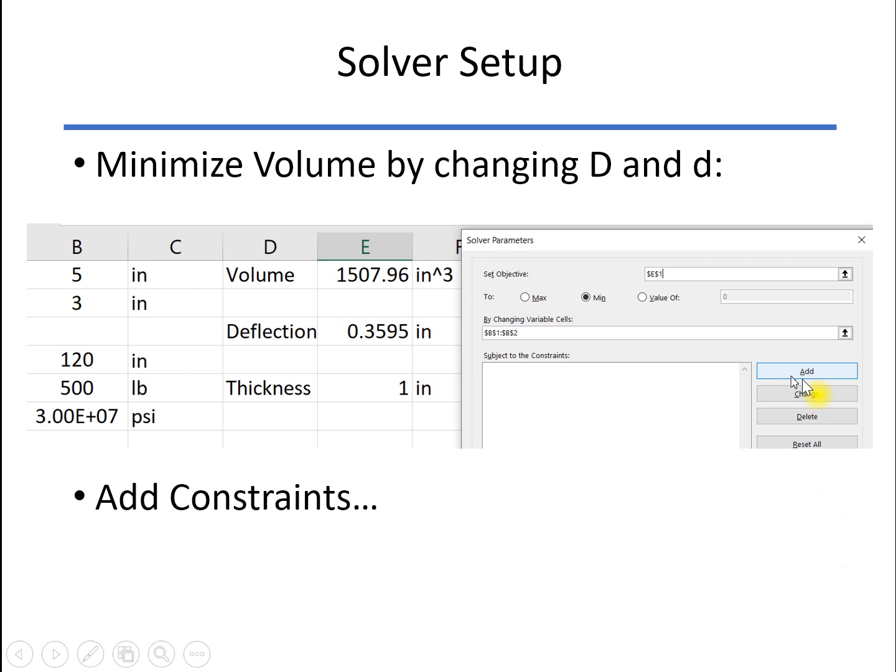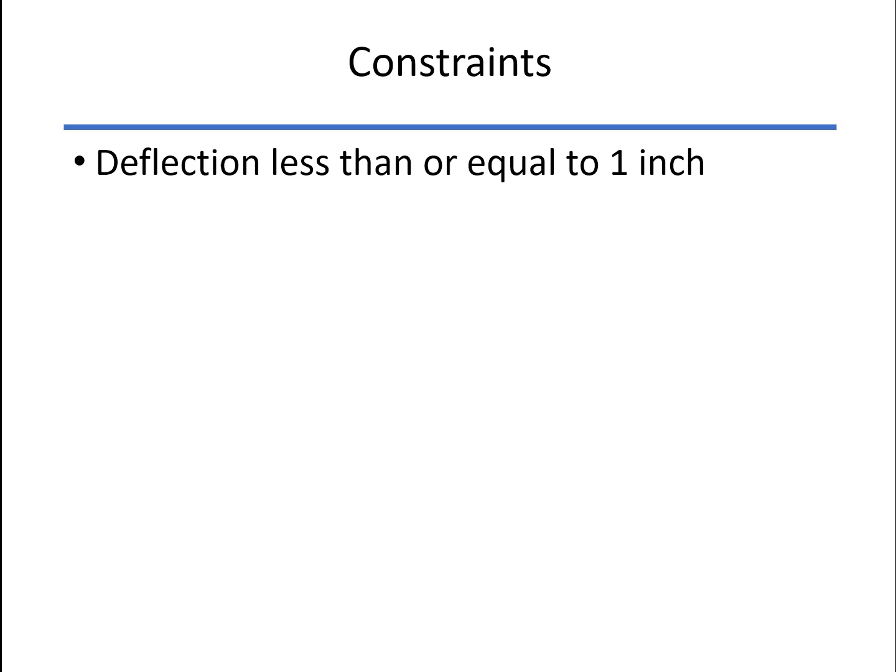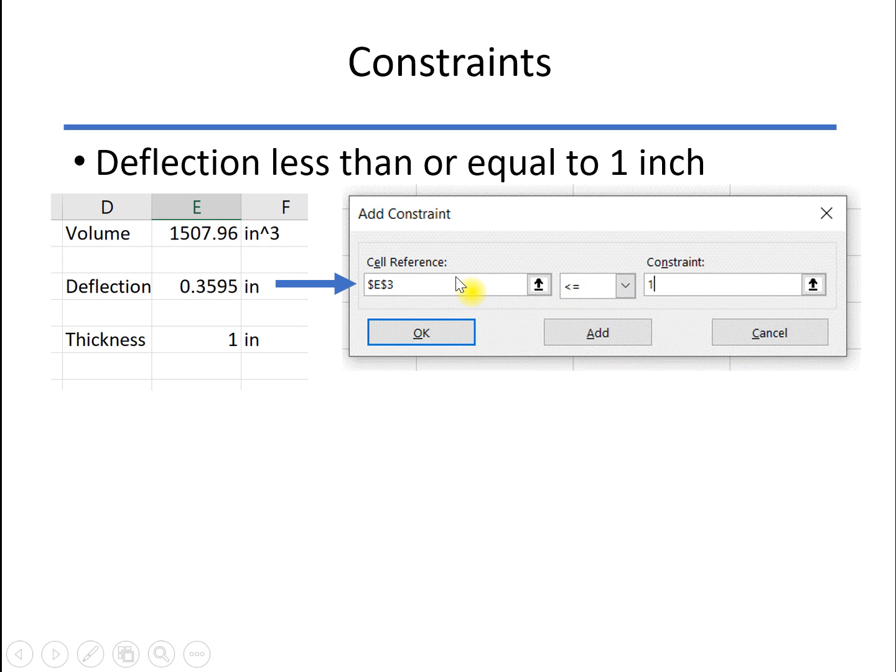But we have to add some constraints to that as well. So we click on Add right here, and a dialog box comes up where we add the constraints. The first one is the deflection is less than or equal to one inch. So for the cell reference, we click on the cell where we are calculating the deflection. With our pulldown box here, we make it less than or equal to and add our value of one inch.